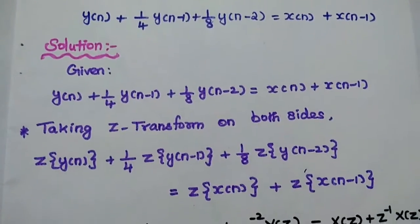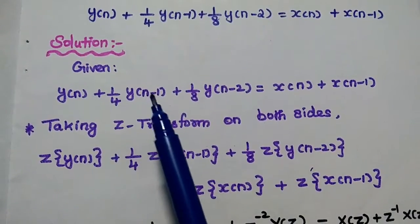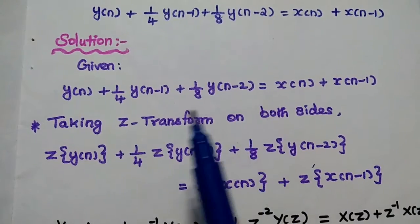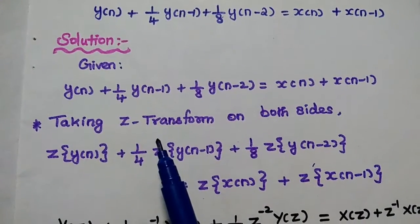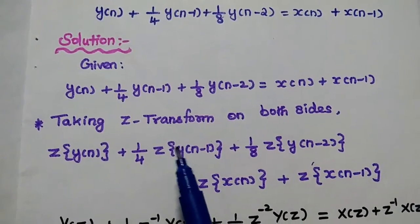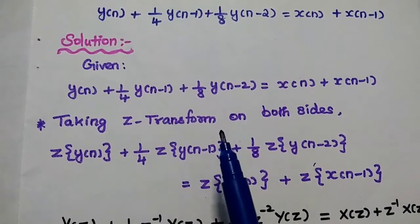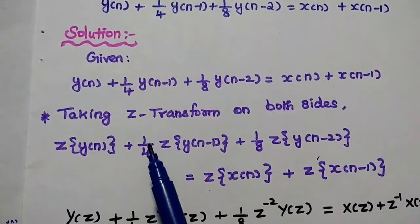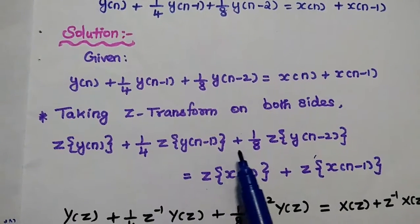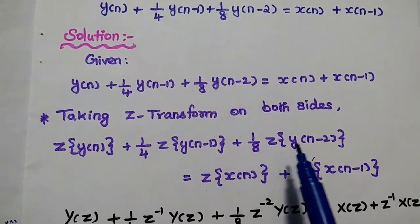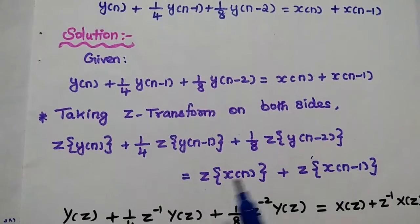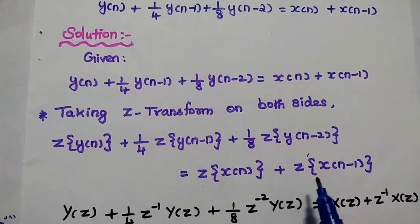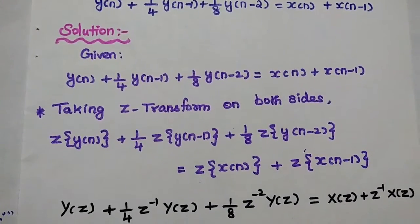In the solution part, let's start with the given data. The given system is described using the difference equation: y(n) + 1/4·y(n-1) + 1/8·y(n-2) = x(n) + x(n-1). We are going to take the Z-transform on both sides of the difference equation.